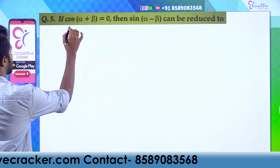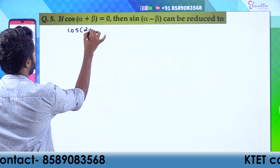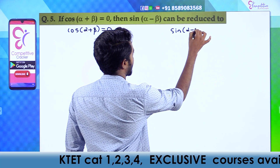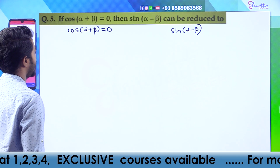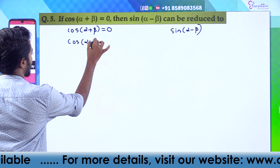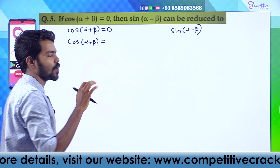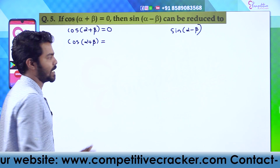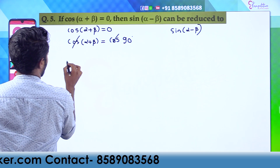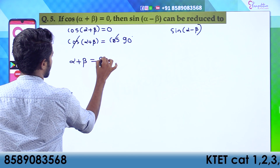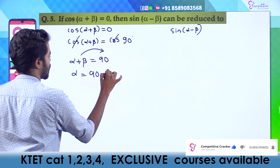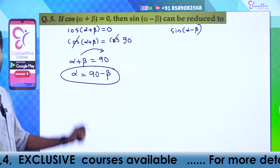We have to find the value of sin(α - β). We are given that cos(α + β) is equal to 0. What value of cos equals 0? Yes, cos 90. So cos(α + β) = cos 90°, meaning α + β is equal to 90 degrees.